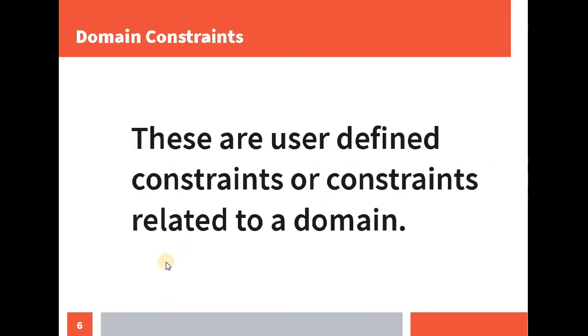And domain constraints. What are domain constraints? These are user dependent constraints or constraints related to a domain. For example, for a person, in order to be eligible to vote, he or she must be above 18 years old. This is a constraint imposed by the user and is specific to the domain that is voting system.